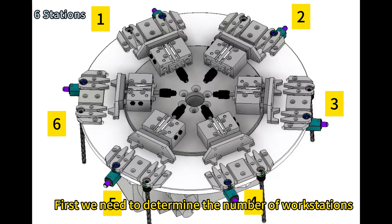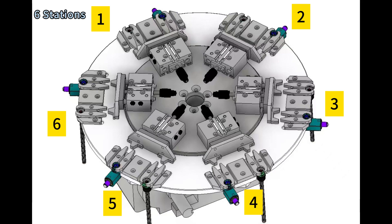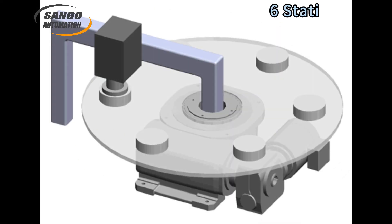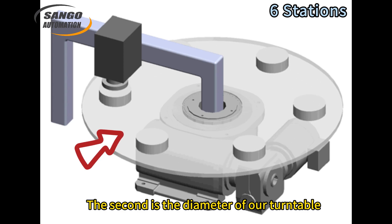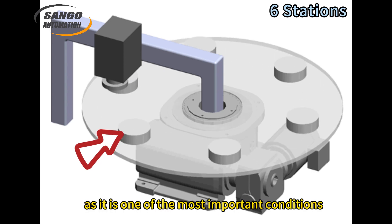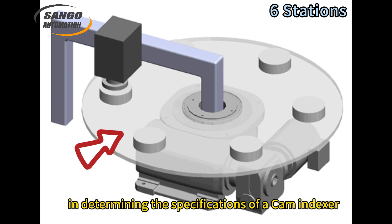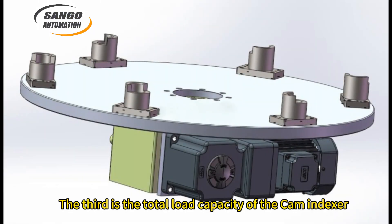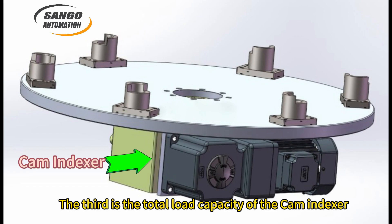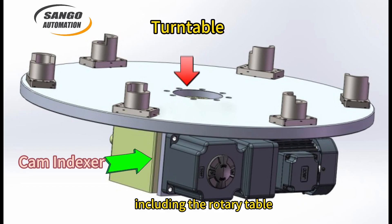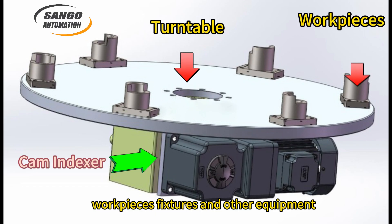First, we need to determine the number of workstations. The second is the diameter of our turntable, as it is one of the most important conditions in determining the specifications of a CAM indexer. The third is the total load capacity of the CAM indexer, including the rotary table, workpieces, fixtures and other equipment.